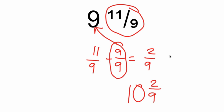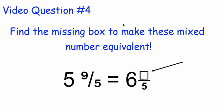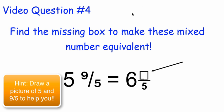Ten and two-ninths is the same as nine and eleven-ninths. Alright, last question: find the missing box to make these mixed numbers equivalent. You have five and nine-fifths and you're trying to find how that's equivalent to six and what over five — going from an improper to a regular fraction.